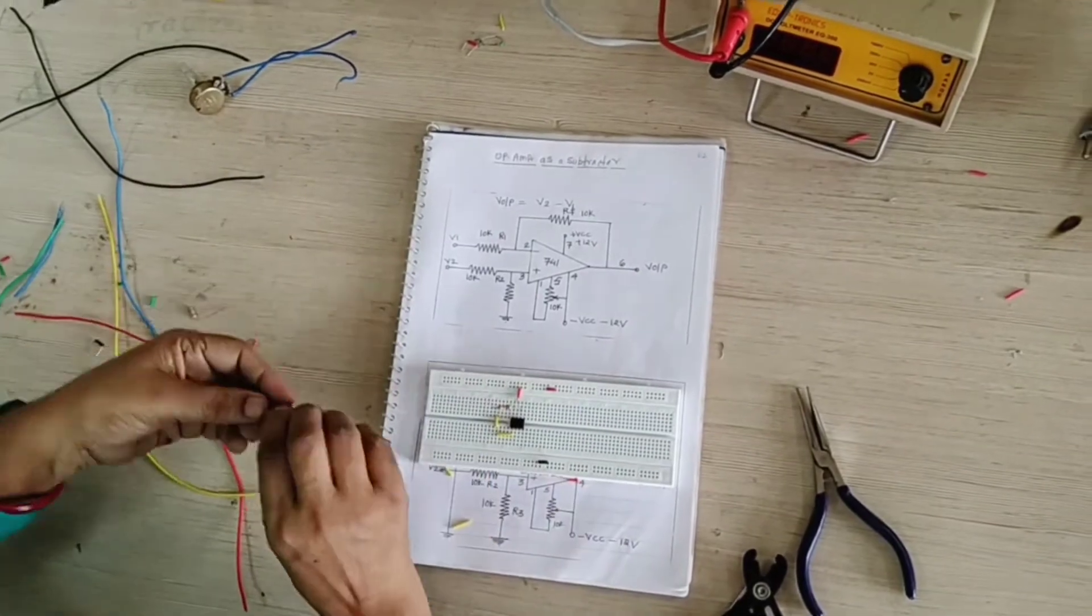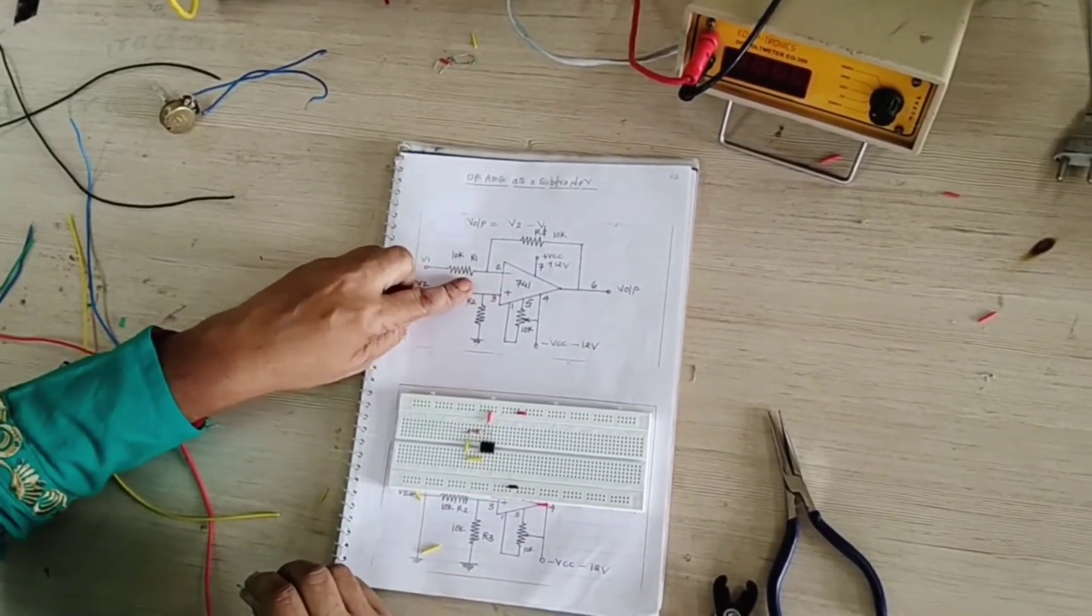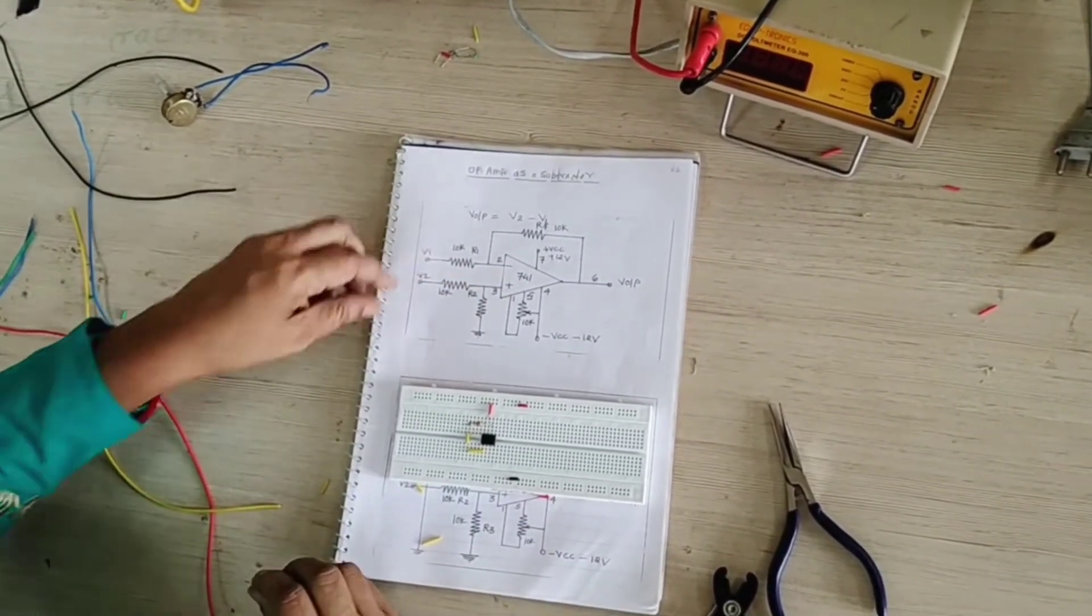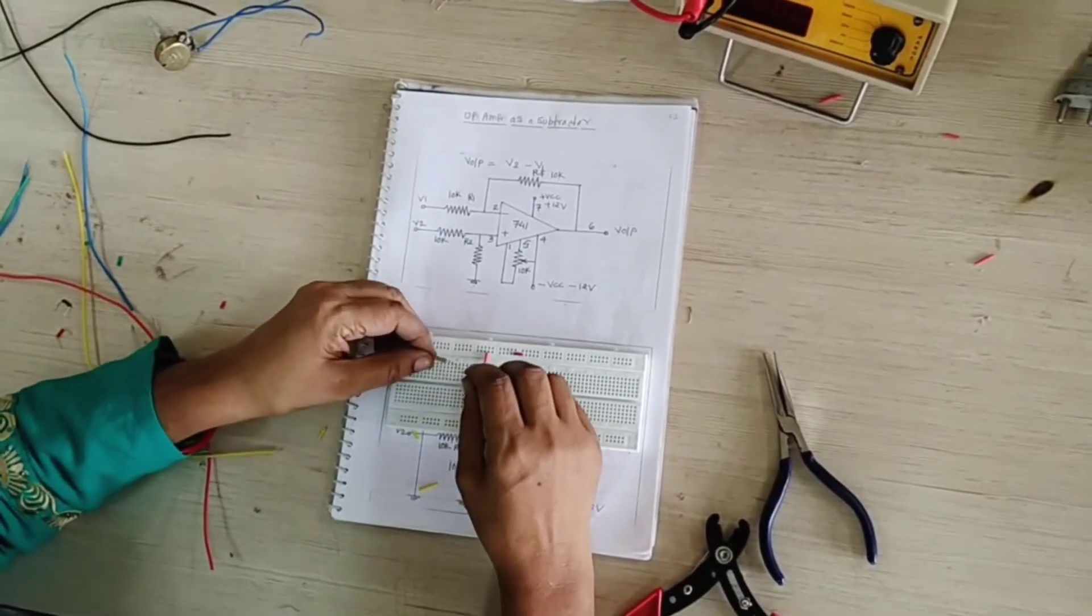10k, 10k resistor and see pin number 2 we are connecting R1 is also 10k so we are connecting like this here.